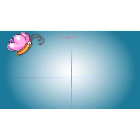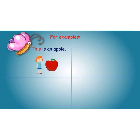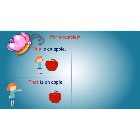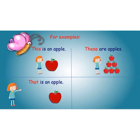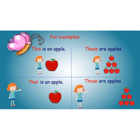Now for a few examples. We'll discuss with the help of examples. 'This is an apple' — singular, near. 'That is an apple' — singular, far. 'These are apples' — plural, near. 'Those are apples' — plural, far.